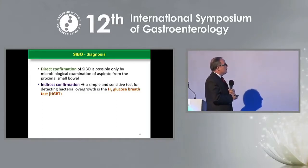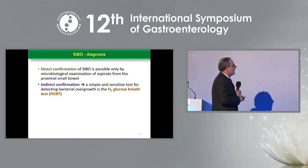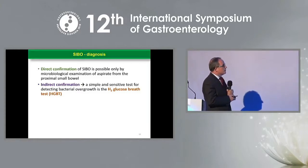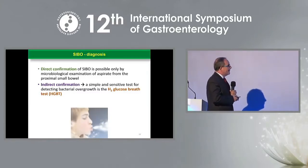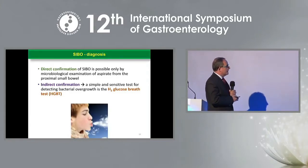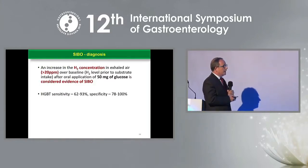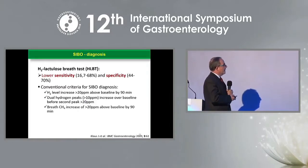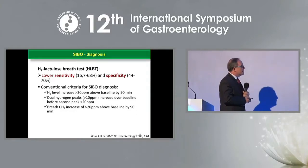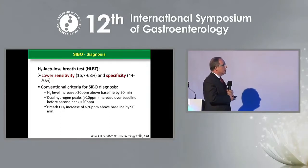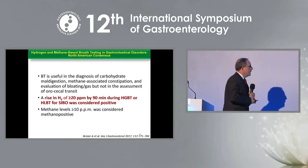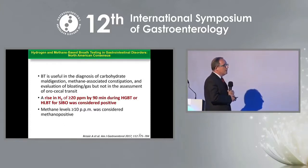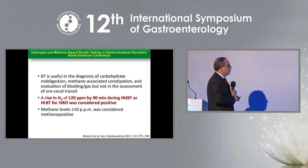Diagnosis can be confirmed by direct examination of aspirate from the proximal small bowel, but indirect confirmation is also possible. This can be reached by breath tests — for example, glucose breath test has high sensitivity and high specificity. Lactulose breath test has lower sensitivity and specificity but can sometimes also be used. According to North American consensus, a rise in hydrogen over 20 parts per million by 90 minutes during these breath tests is considered positive.